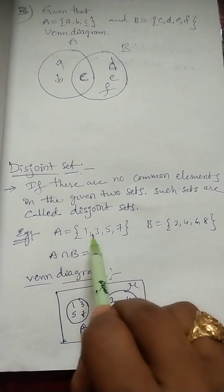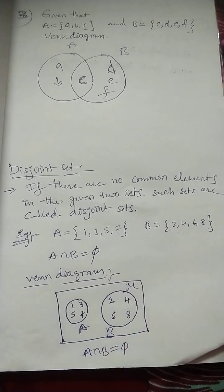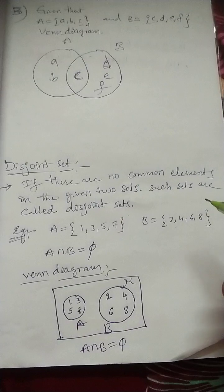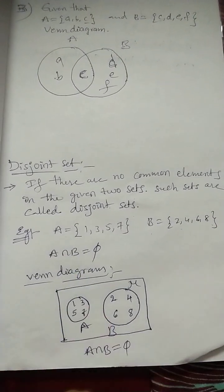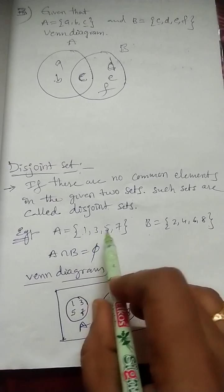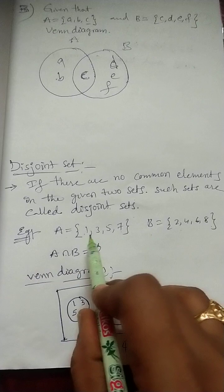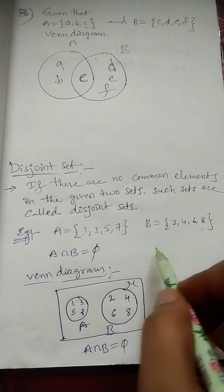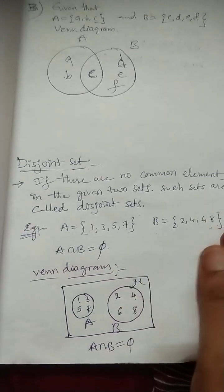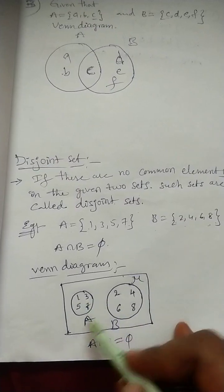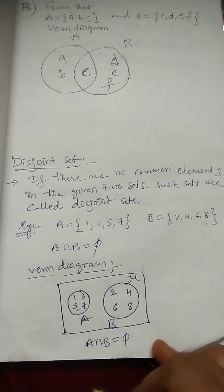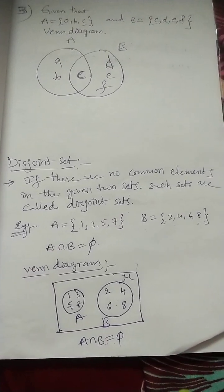So, here, this is the definition of the disjoint set. Set A consists of these elements. Set B consists of these elements. Now, A intersection B is equal to phi. Why? Because there are no common elements. These are odd numbers. These are the even numbers. There are no common numbers in both the sets. So, which is equal to phi. Phi is empty set. Next, Venn diagram for this, how to draw? Set A, set B. This is the universal set. This is set A. This is set B. Set A having odd numbers. Set B having even numbers. So, A intersection B is equal to phi.